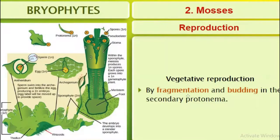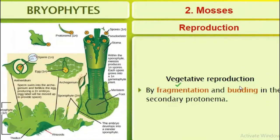Next is reproduction in mosses. First is vegetative reproduction. Like liverworts, they also possess fragmentation. Additionally, one more method is budding — budding in the secondary protonema. So the two types of vegetative reproduction found in mosses are fragmentation and budding.